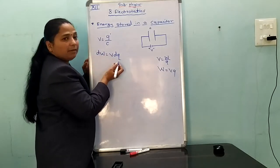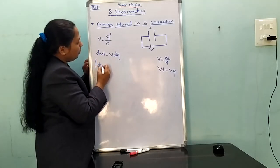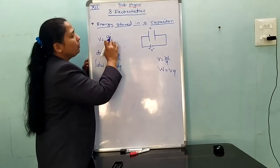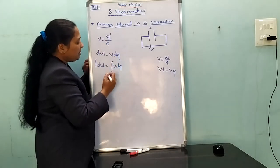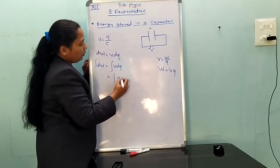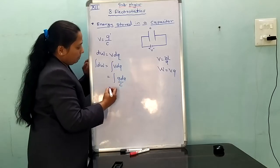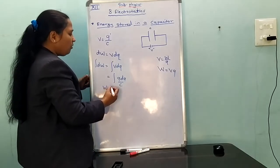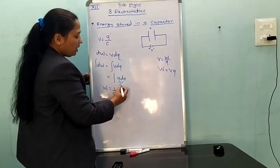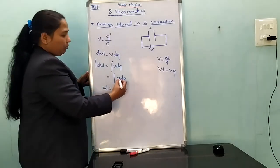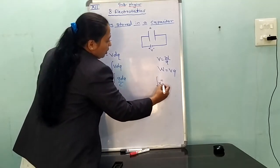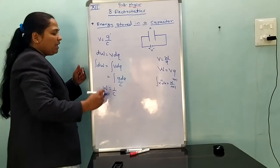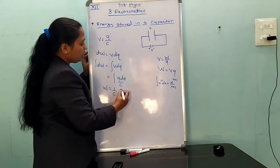Now integrating on both sides: the integration of DW is equal to the integration of V DQ. But V is equal to Q dash upon C, so this becomes the integration of Q DQ upon C. Taking 1 upon C as a constant factor, the integration of Q DQ gives Q squared upon 2.